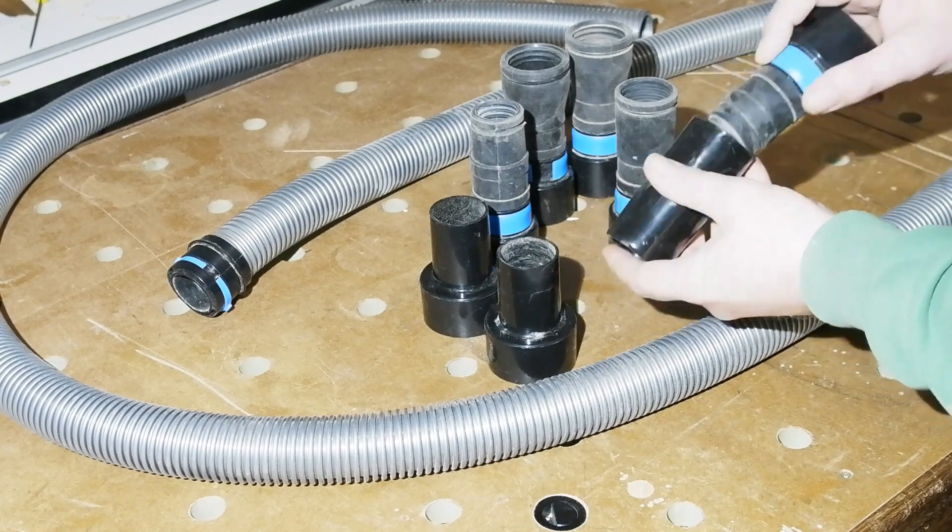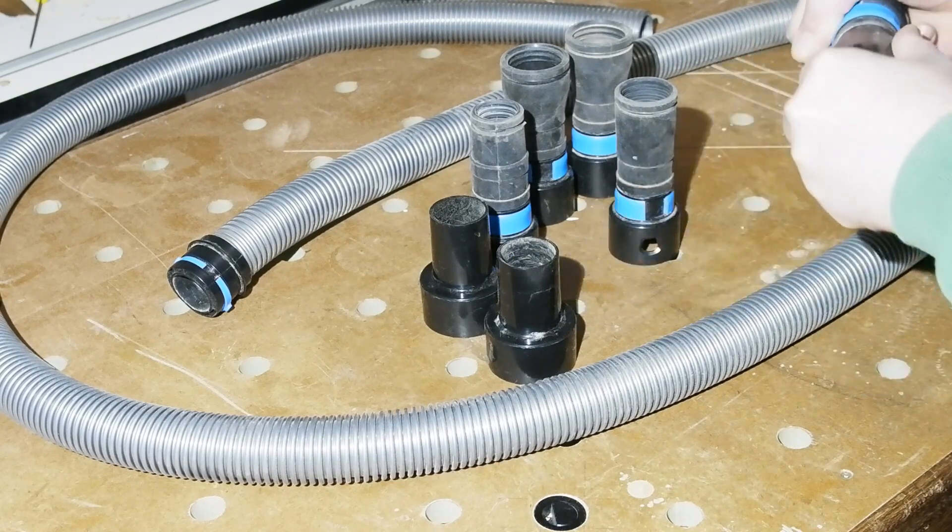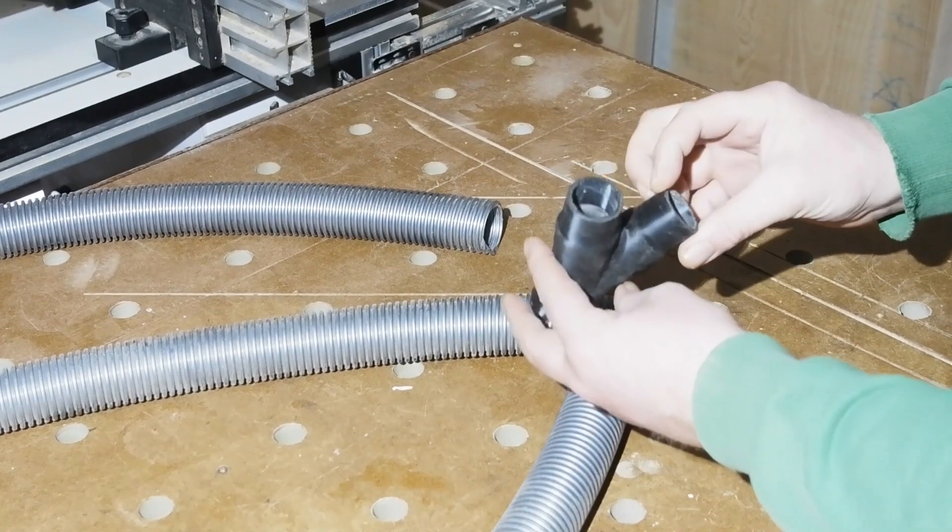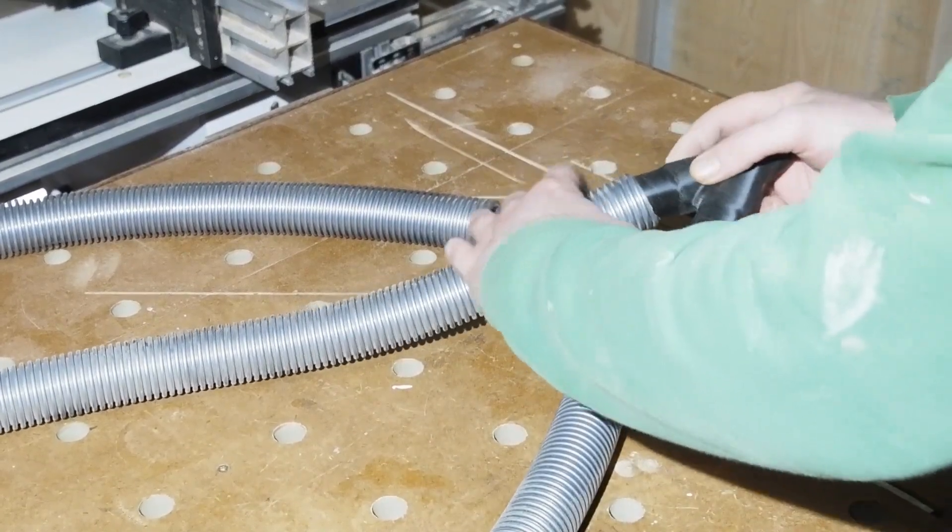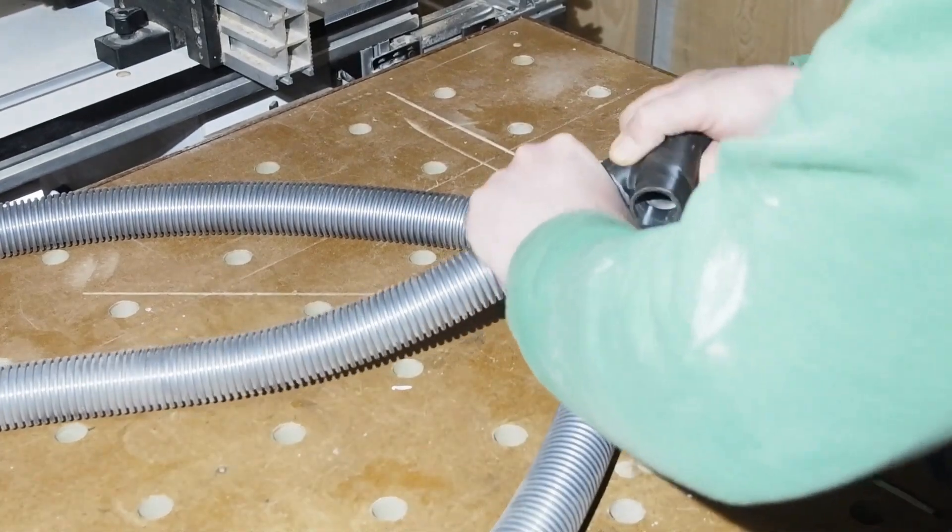Before I get into how I'm using these around the shop, a quick look at a couple of other complimentary purchases. As I said, I split the hose so I can have above and below extraction on my table saw.